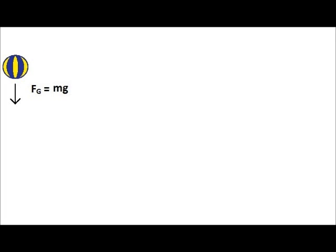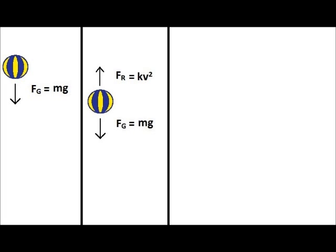A few seconds later, the ball has a significant velocity. Now there is an actual resistance force, meaning the force accelerating the ball downwards is not zero, but it's not as big as it was previously. Assigning down as the positive direction, we can describe the net force mathematically as the gravitational force minus the resistance force.